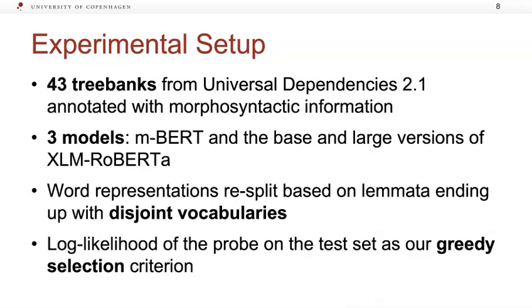We select 43 tree banks from Universal Dependencies 2.1 annotated with morphosyntactic information and use three models, embered and the base and large versions of XLMR.